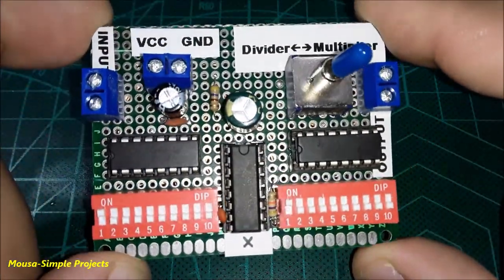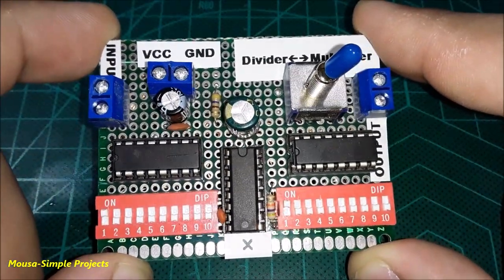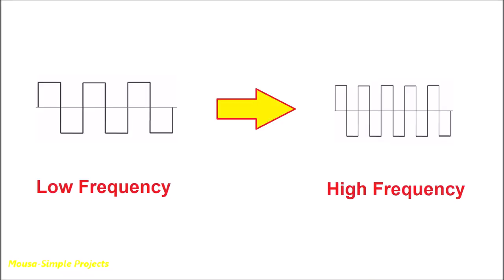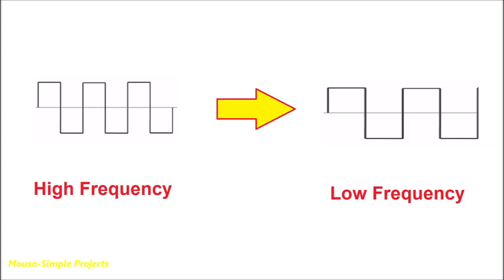In this video, I want to talk about frequency multipliers and frequency dividers and their applications. In some electronic circuits, you have to increase or decrease the frequency by a certain ratio.